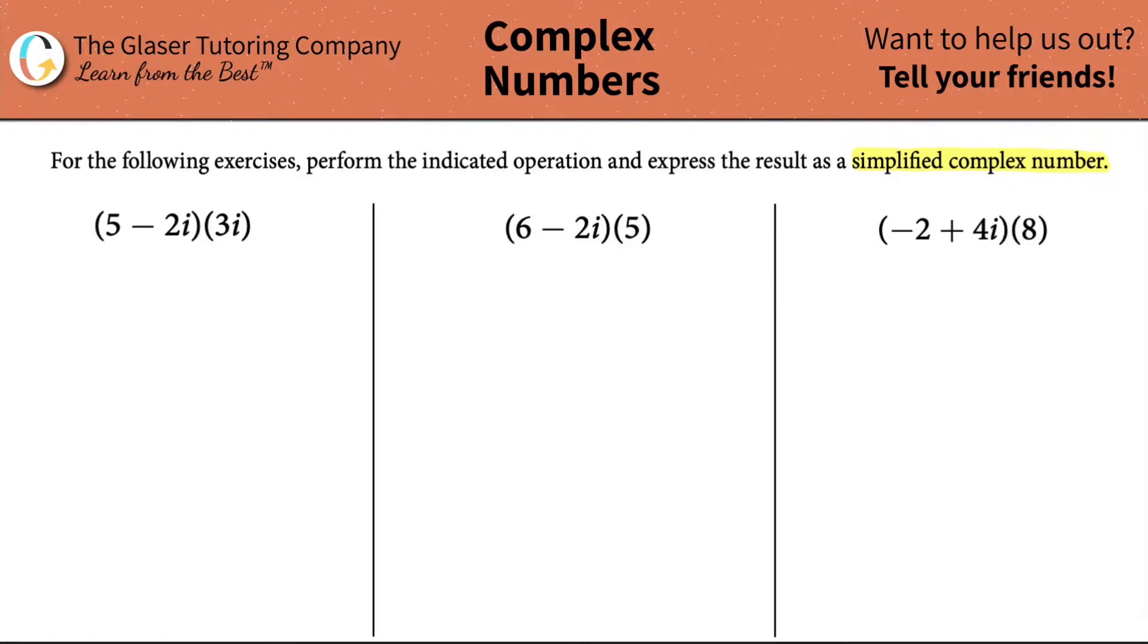So what this basically means is that the first term wants to be multiplied by that second term, but then the other term in the same parentheses is like, well, if you're getting multiplied, I need to get multiplied as well. They all have to play fair. So that's really what we're doing here. So the first thing is, let's do the 5 times 3i. 5 times 3 is 15, and you just drag along the i value. So that would be 15i.